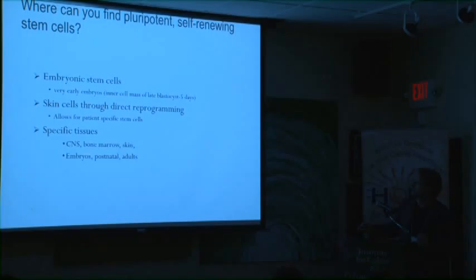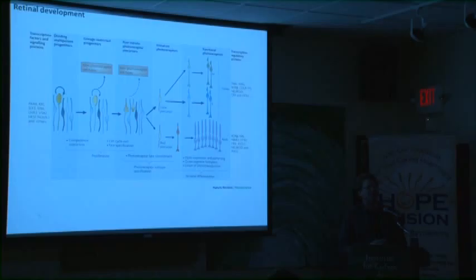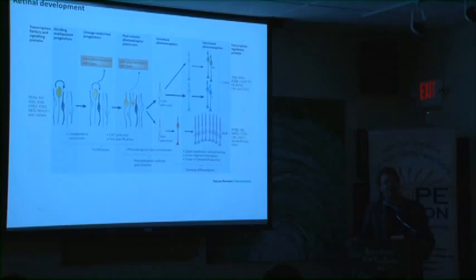There are lots of places to get self-renewing pluripotent cells, and we're going to hear about all of them today. I'm going to talk about tissue-specific cells isolated from the CNS — in this case, the retina.